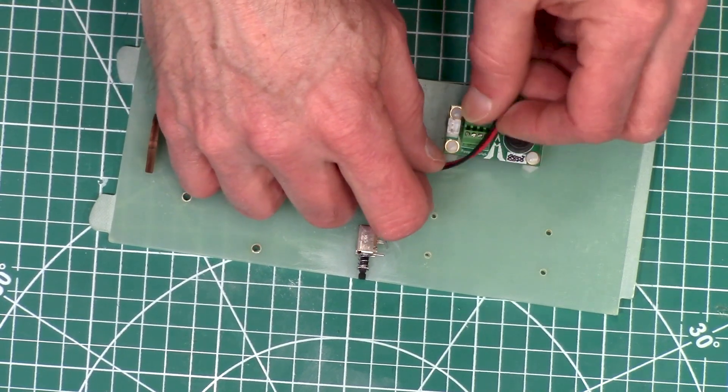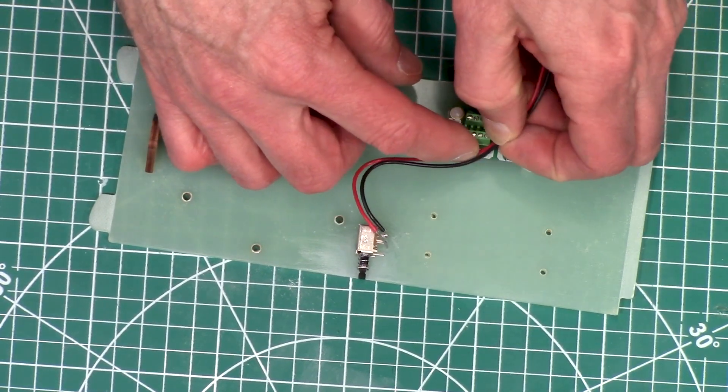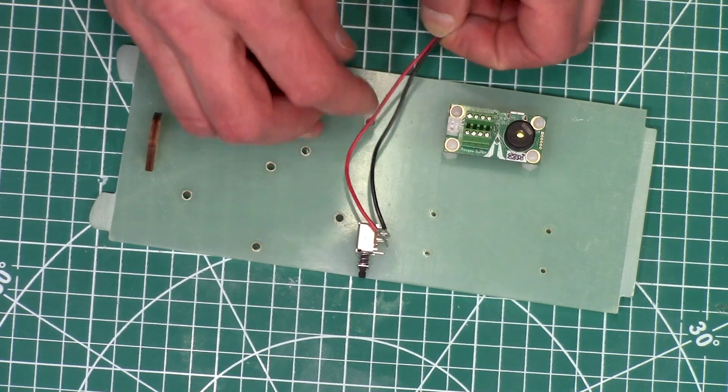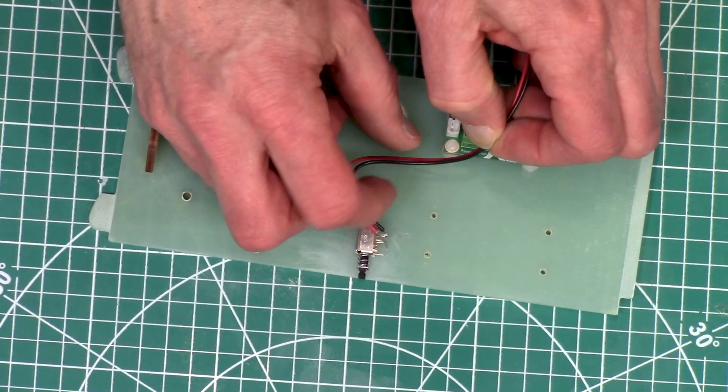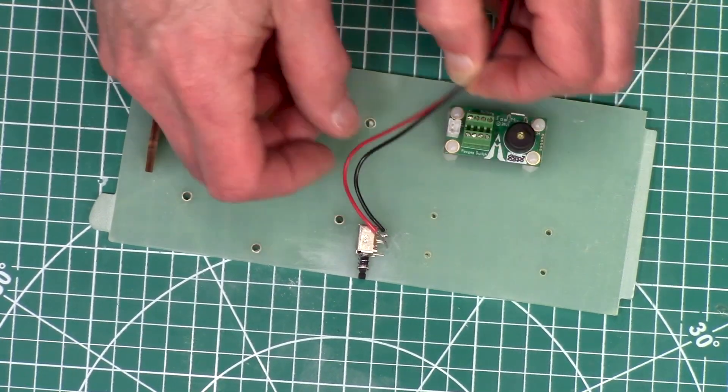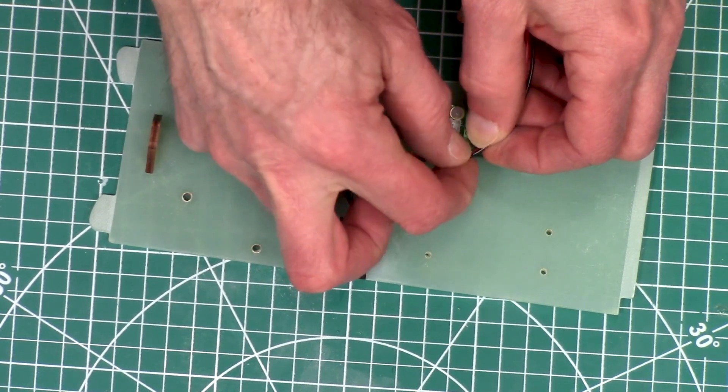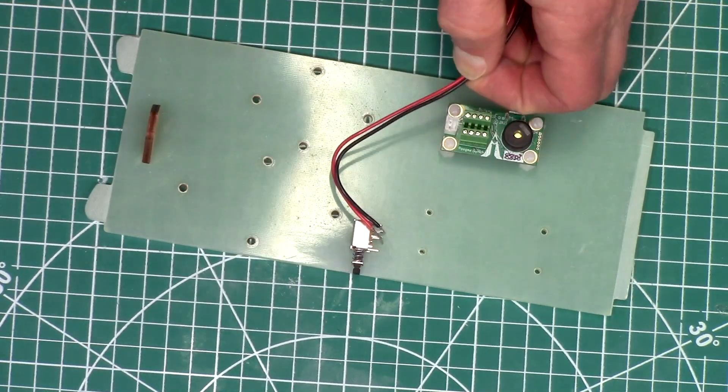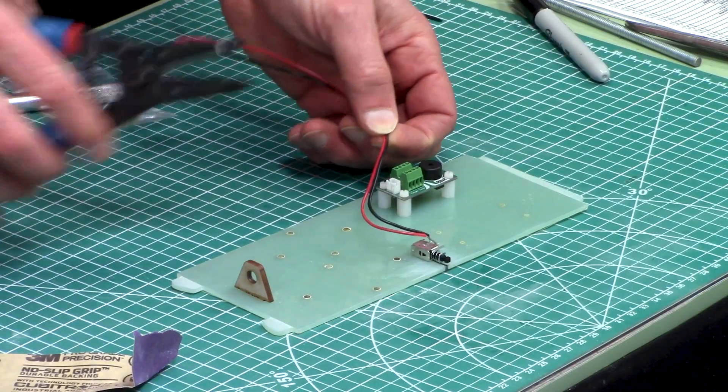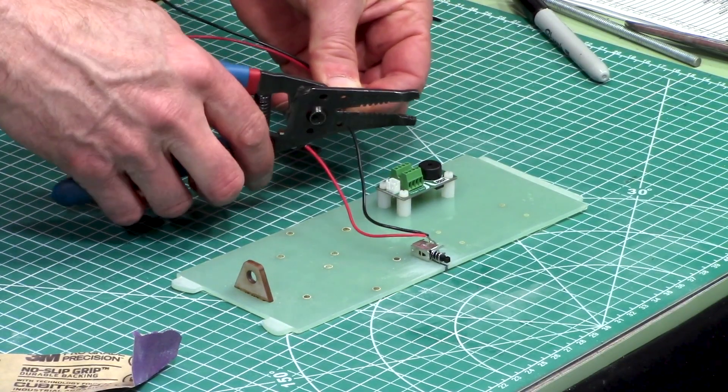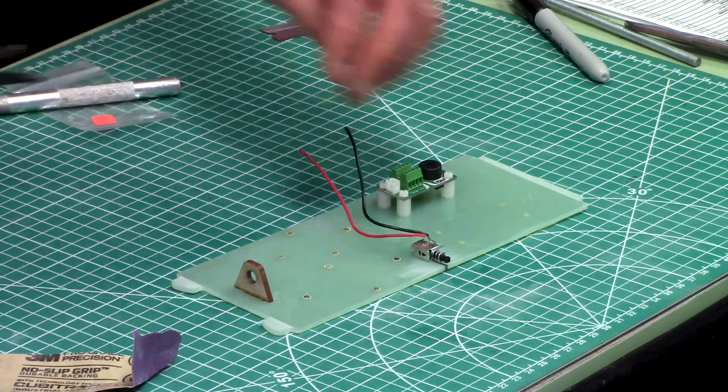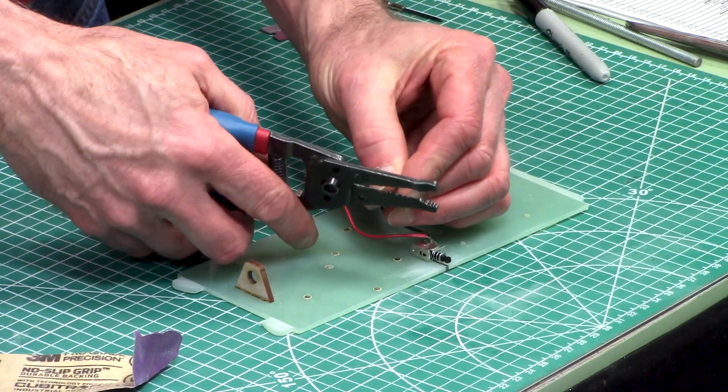Now these wires only need to be as long as that switch right there, so I can actually cut them. The red one's going to be just slightly longer than the black one. And we'll strip these.